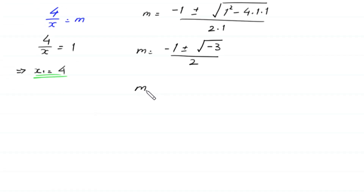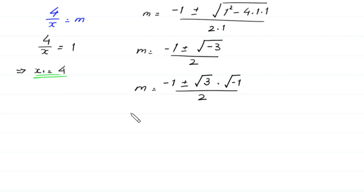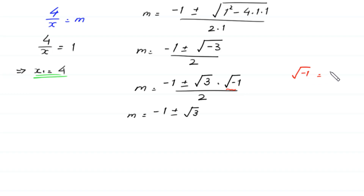So m equals negative 1 plus or minus square root of 1 squared minus 4 times 1 times 1, which is 1 minus 4 equals negative 3, divided by 2. We can write square root of negative 3 as square root of 3 times square root of negative 1, divided by 2. Since square root of negative 1 equals i, m equals negative 1 plus or minus square root of 3 times i, divided by 2.